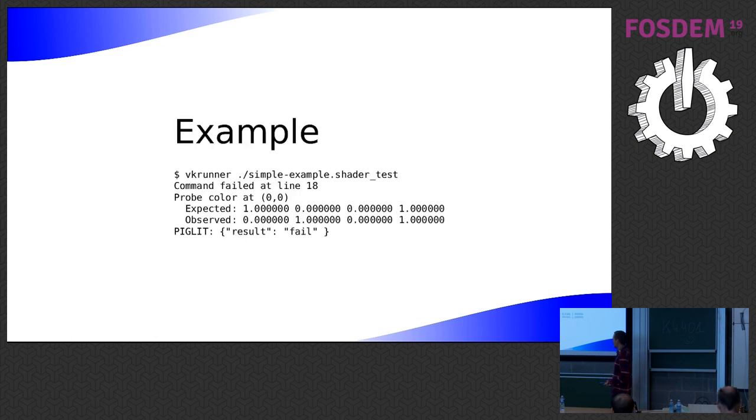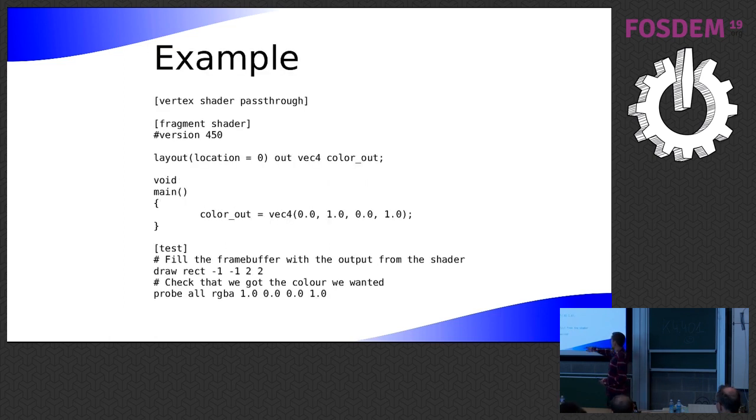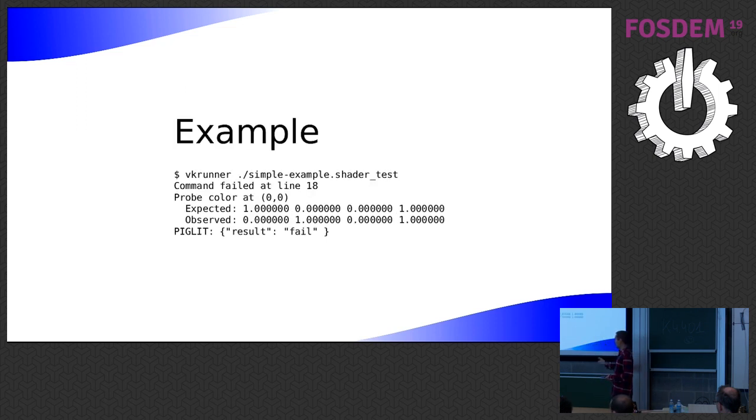It's a really high-level language to just run some tests with the shader. So in this case, drawRect, it just draws a full screen rectangle. And then probe, that probes the framebuffer for the color. And then to run it, it's just a standalone program. You just run it with the name of the script on the command line and it tells you whether it worked or not. And in this case, it didn't work because the shader wrote a green color out and then it's probing for a red color. So it's telling you it got the wrong color.